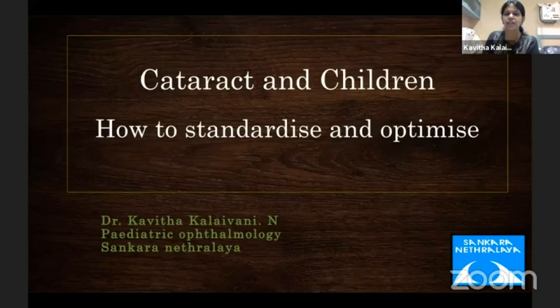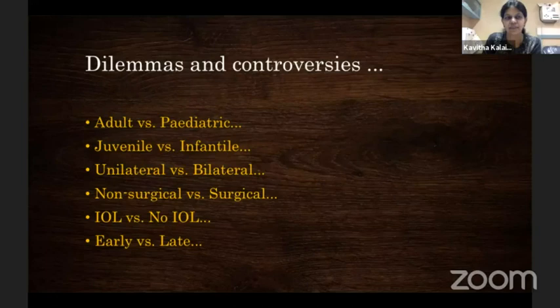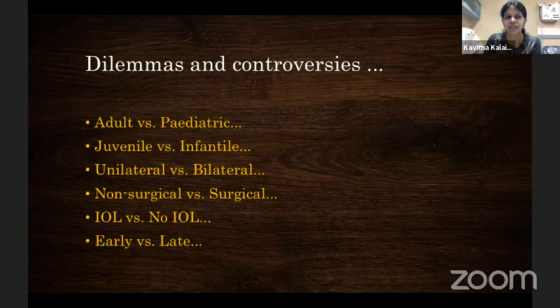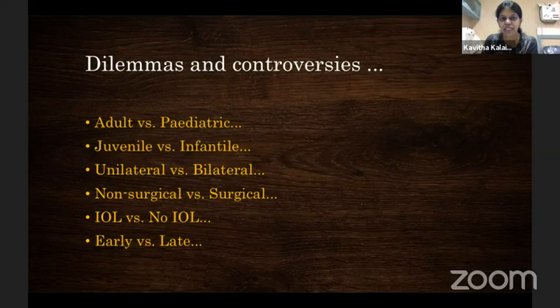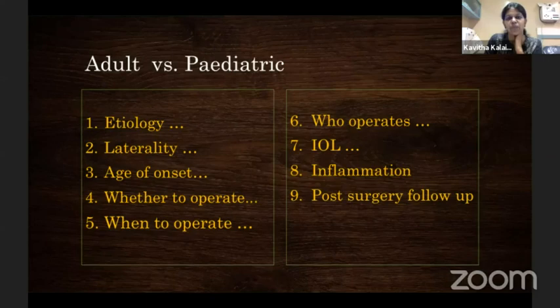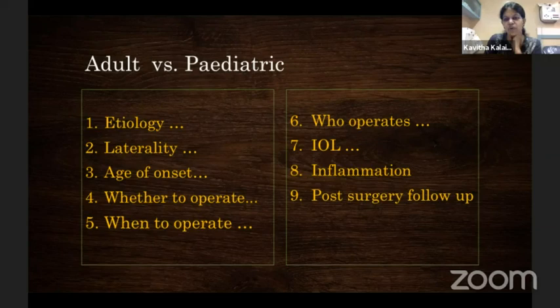Cataracts in children — how to standardize and optimize. The dilemmas with pediatric cataracts: adult cataracts and pediatric cataracts are extremely different in every way. Even juvenile and infantile cataracts are very different, as are unilateral versus bilateral cataracts. There is sometimes a role for non-surgical management. We have to decide whether IOL should be implanted and whether early or late surgery is preferred — many controversies and dilemmas. Adult and pediatric cataracts differ in presentation, etiology, laterality, age of onset, whether to operate, when to operate, who operates, whether to implant IOL primarily or secondarily, post-surgical inflammation, and follow-up needs.